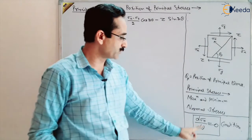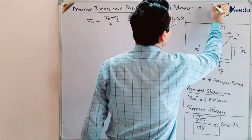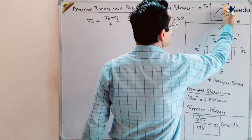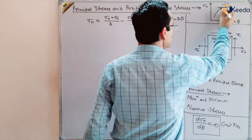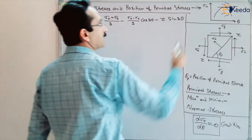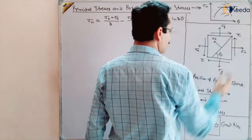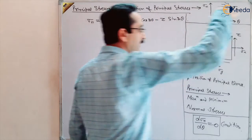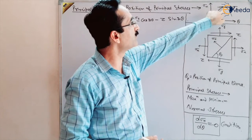For maxima, the slope of stress with respect to theta should be equal to zero. If we draw a curve between normal stress and theta, we get a curve, and at a certain point — at maxima or minima — the stresses will be sigma 1 or maximum, or minimum stresses. The slope here is zero because it is a horizontal line. So, the slope of sigma n with respect to theta should be equal to zero at the position where the principal stress is acting. Sigma 1 is the maximum principal stress and sigma 2 will be the minimum principal stress.